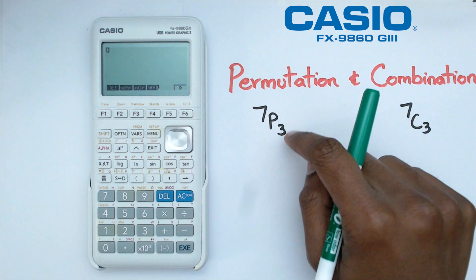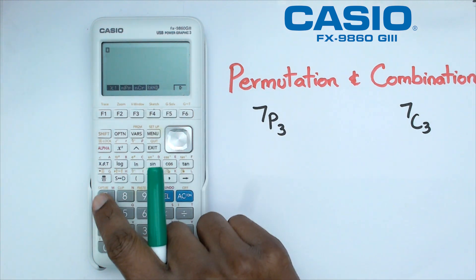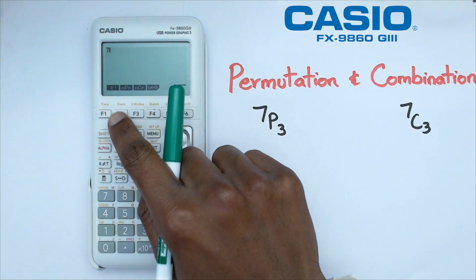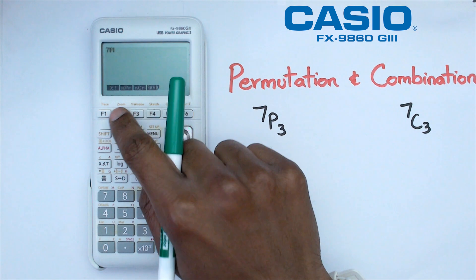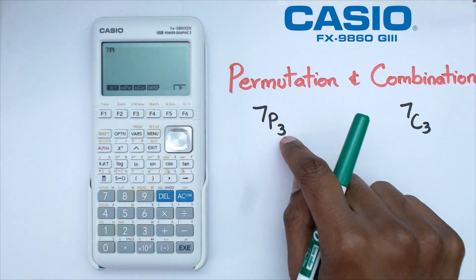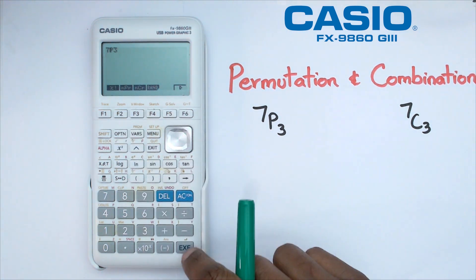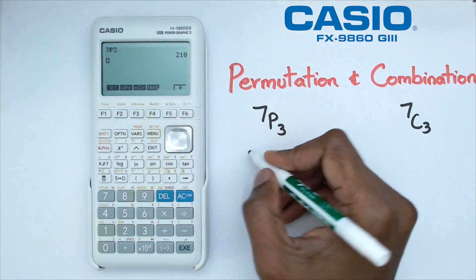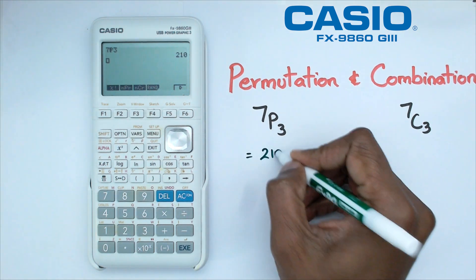So if we want to find 7P3, then all we need to do is click on 7. We're going to click F2 for the NPR button, which is the permutation, and we're going to put R, which happens to be 3. So when we do 7P3, we are going to get 210.